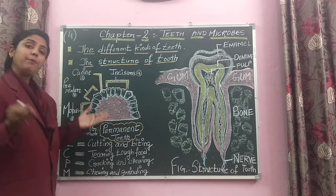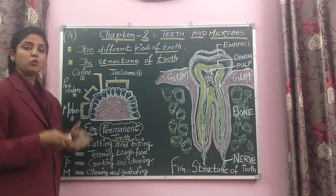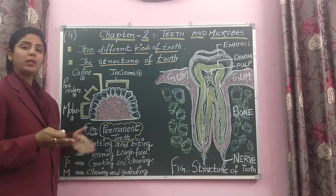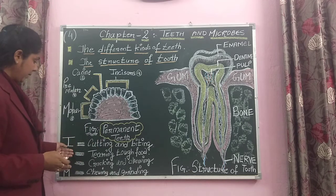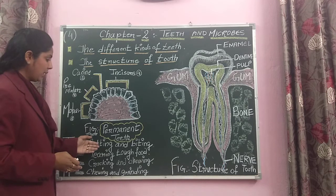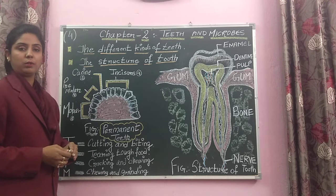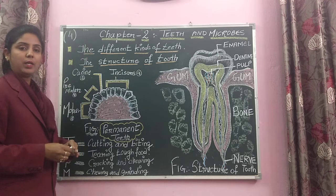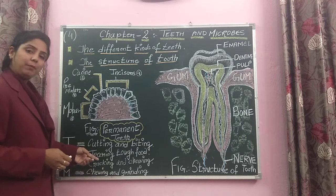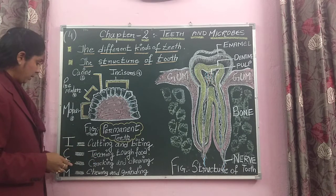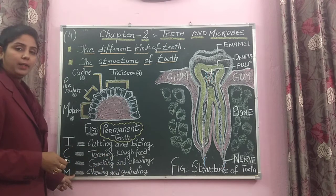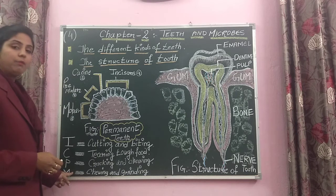Now, what are the different functions of these teeth? Each type has a specific function. Incisors are used for cutting and biting food. Canines are for tearing tough foods. Premolars are for cracking and chewing, whereas chewing and grinding is the function of molars.